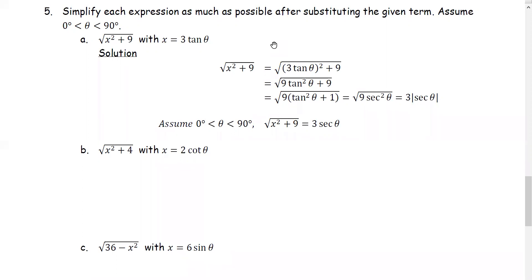The square root of x squared plus 9: for x, we rewrite it as 3 times tangent theta raised to the second power, therefore we get 9 tangent squared theta. Added by 9, we see 9 and 9 as a common factor, so we have the square root of 9 times the quantity tangent squared theta plus 1. The tangent squared theta plus 1 can be replaced by secant squared theta.